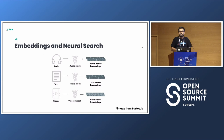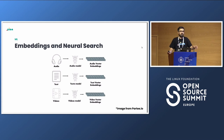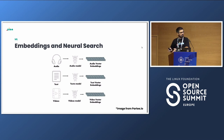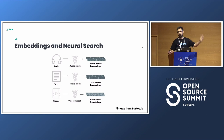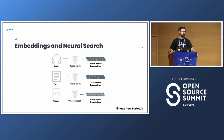We try to represent data in a vector, and the job of the model is to make sure that this vector has some semantic meaning. When it comes to neural search, it means that similar objects are close to each other. When it comes to generative AI, it means that at the decoding step, they represent nice pictures or generative content.